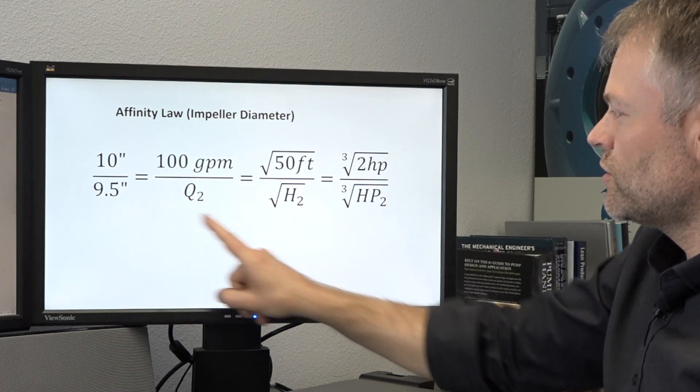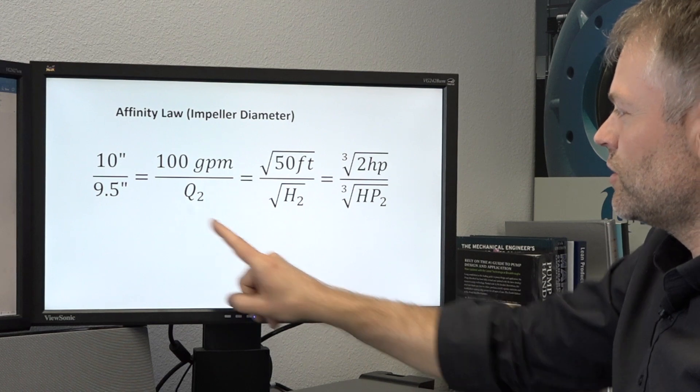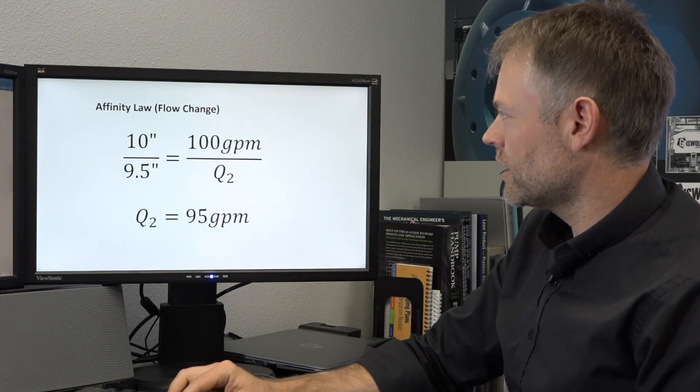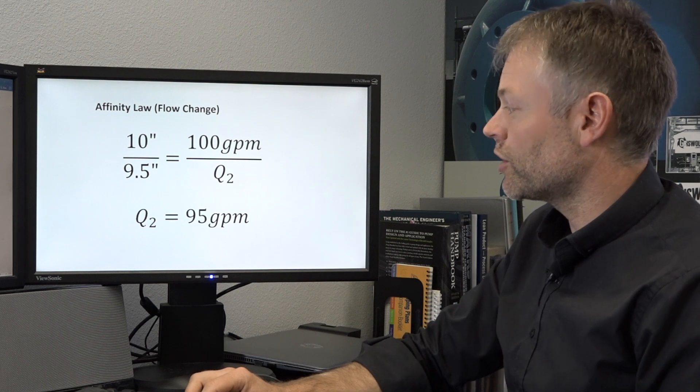We can now, using the formula, calculate Q2, H2, and HP2. Let's start with the change in flow or Q2.